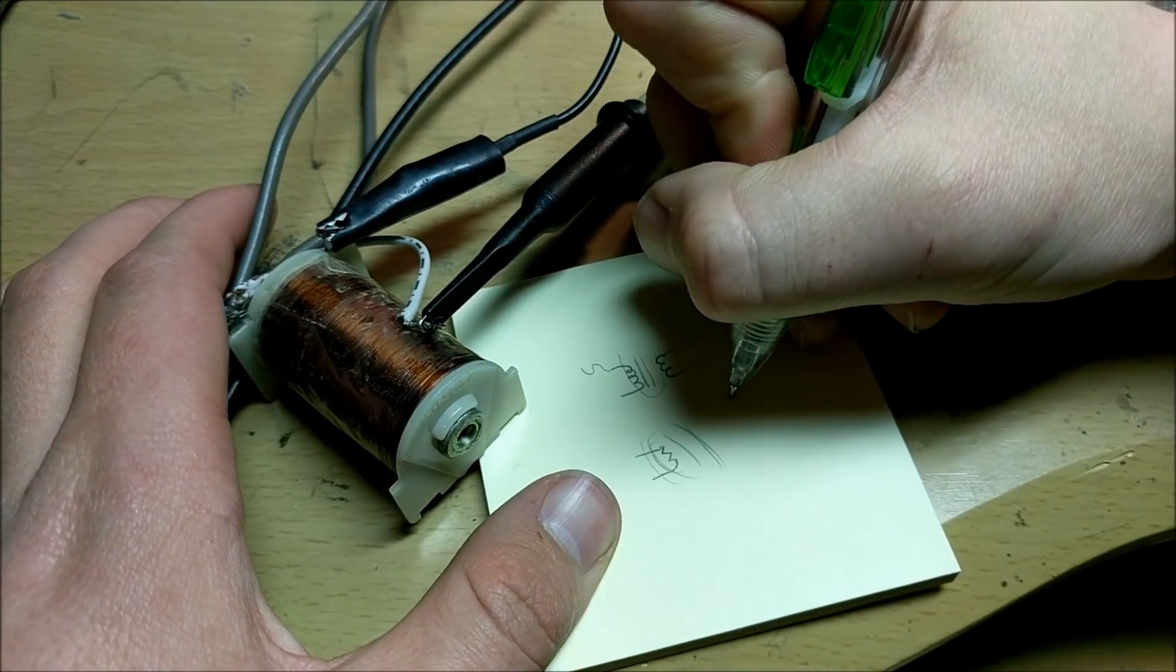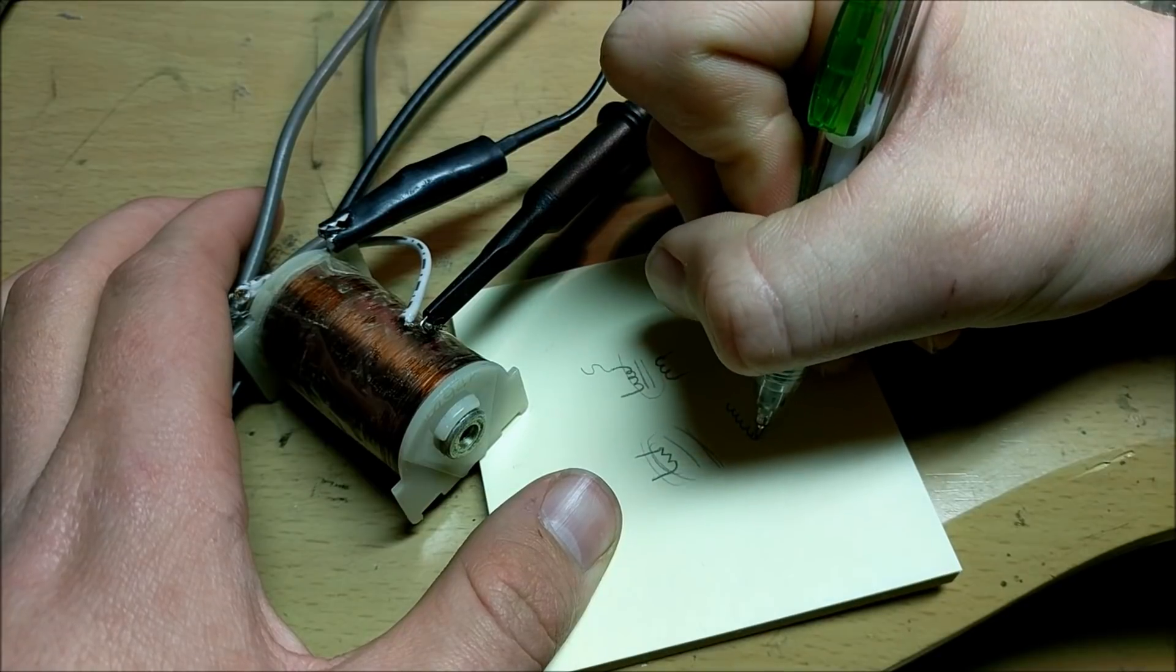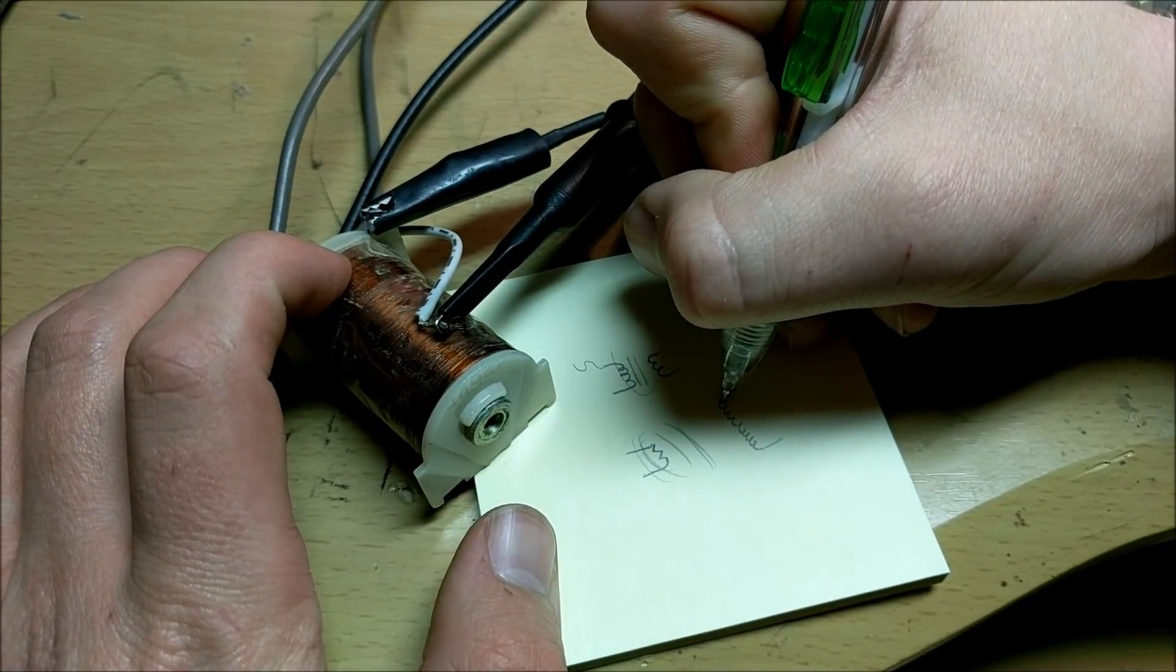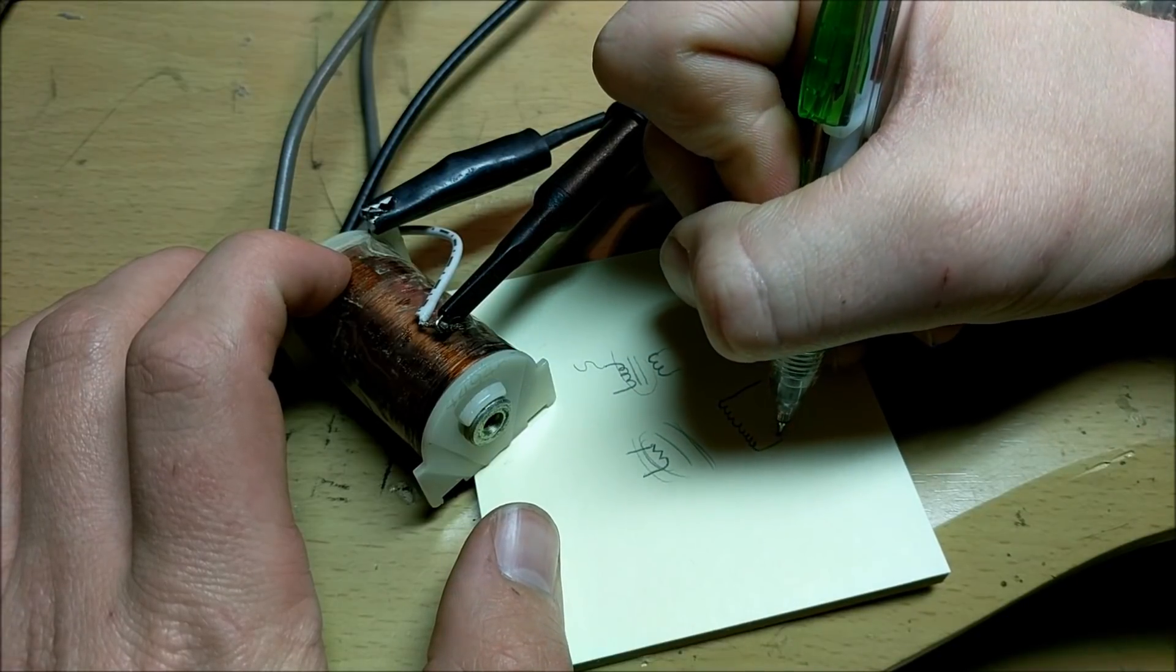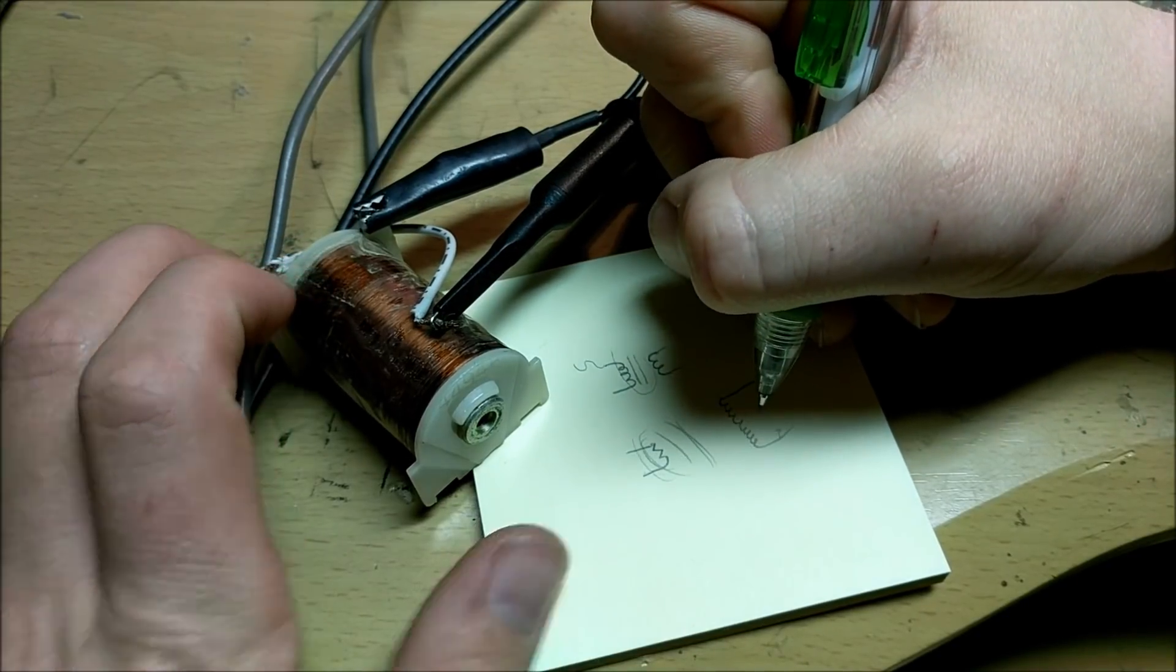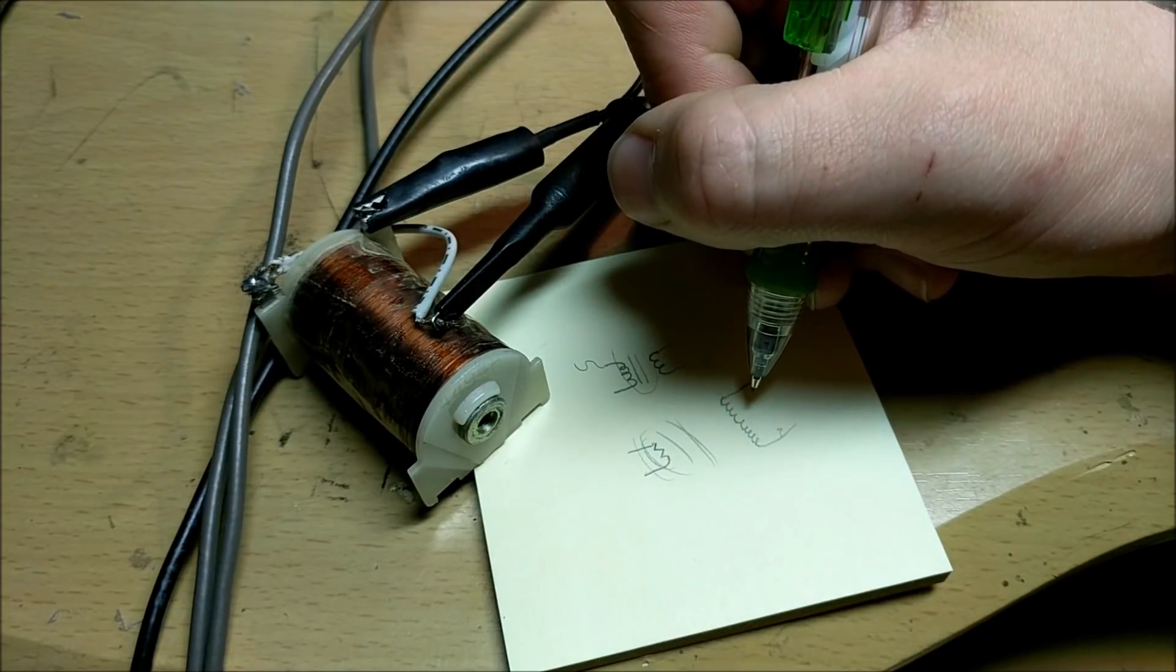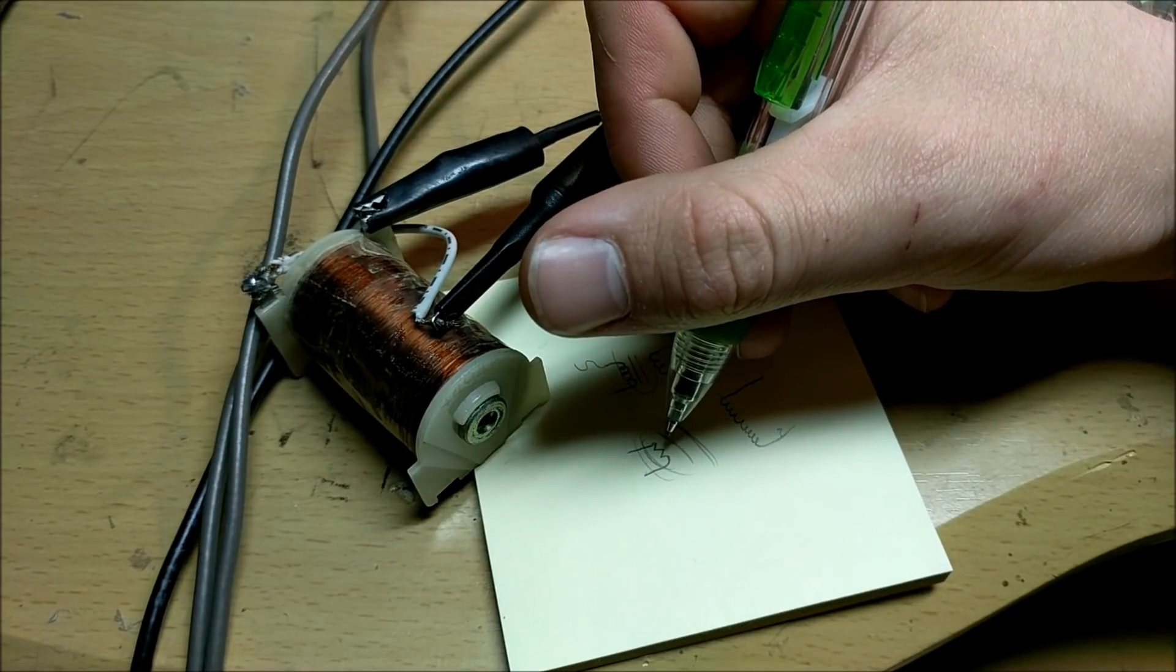We have this large wound coil as the secondary, connected to the oscilloscope. This coil probably has over a thousand turns, which induces a relatively large voltage even when far from the primary coil.